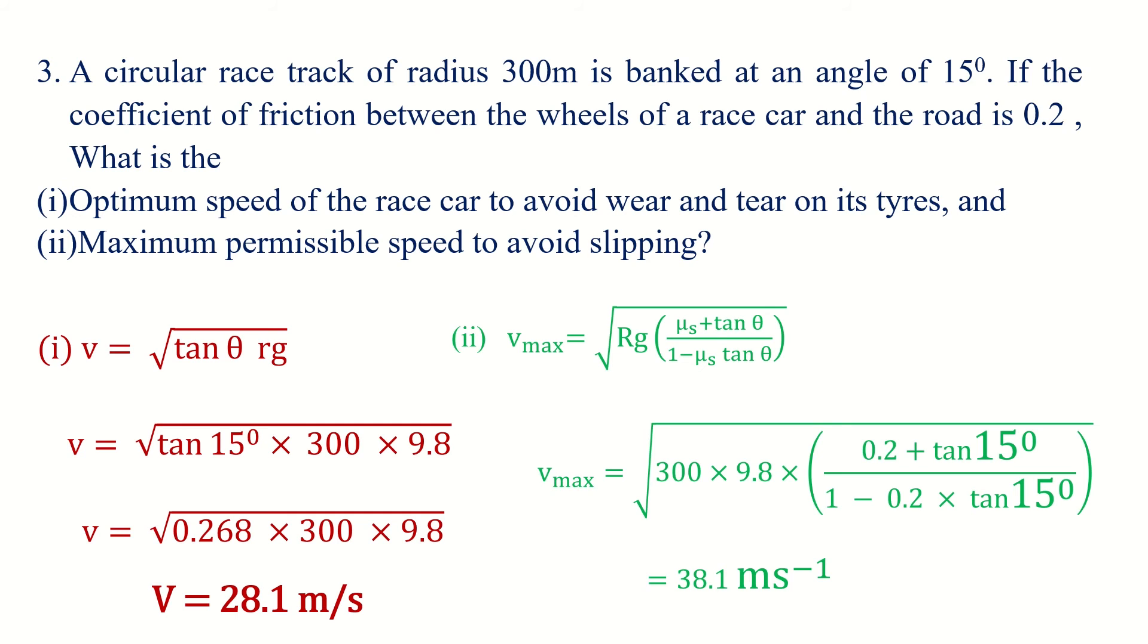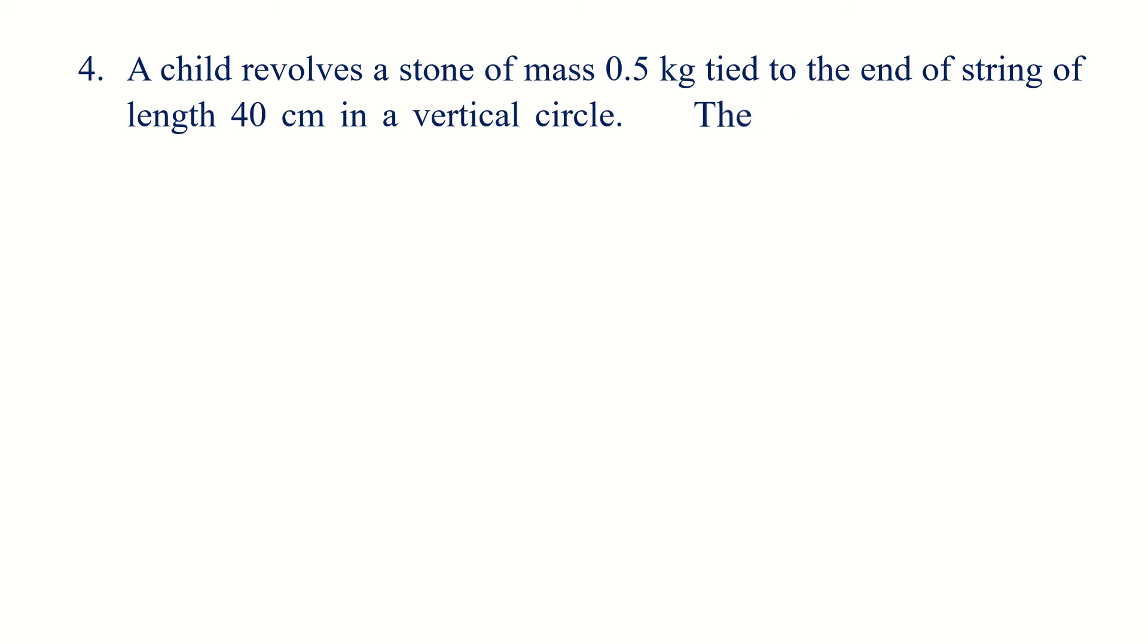Then fourth question: A child revolves a stone of mass 0.5 kg tied to the end of a string of length 40 cm in a vertical circle. The speed of the stone at the lowest point of the circle is 3 meters per second.